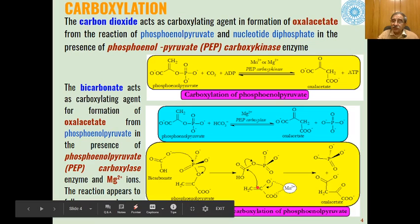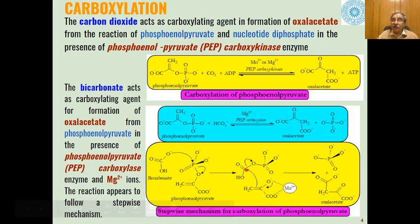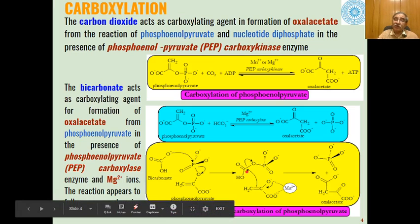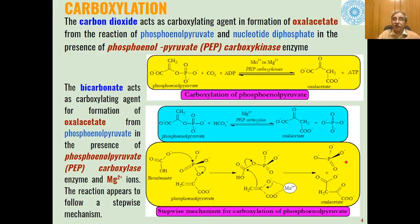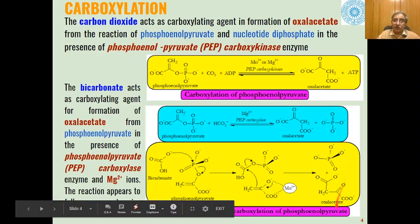Because of metal ion neutralization of the negative charge, the attack of the carbon-carbon double bond as a nucleophile takes place on this carbon. Breaking of the carbon-oxygen bond occurs and we get the carboxylated product, with phosphate ion eliminated to give us the carboxylated product.